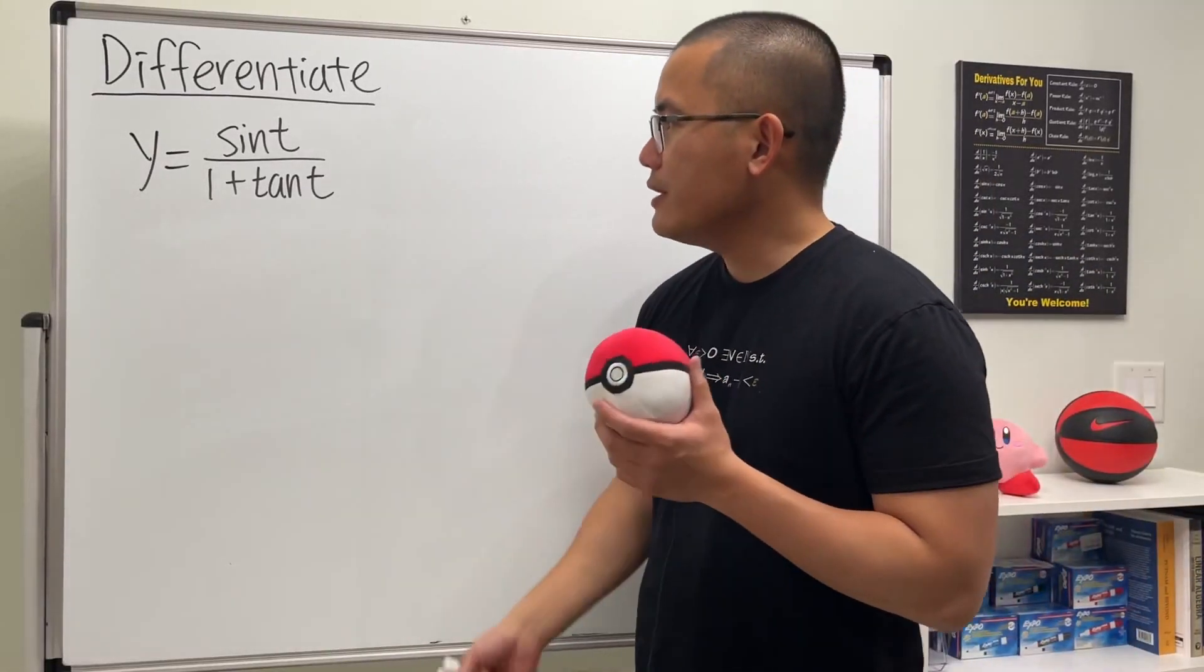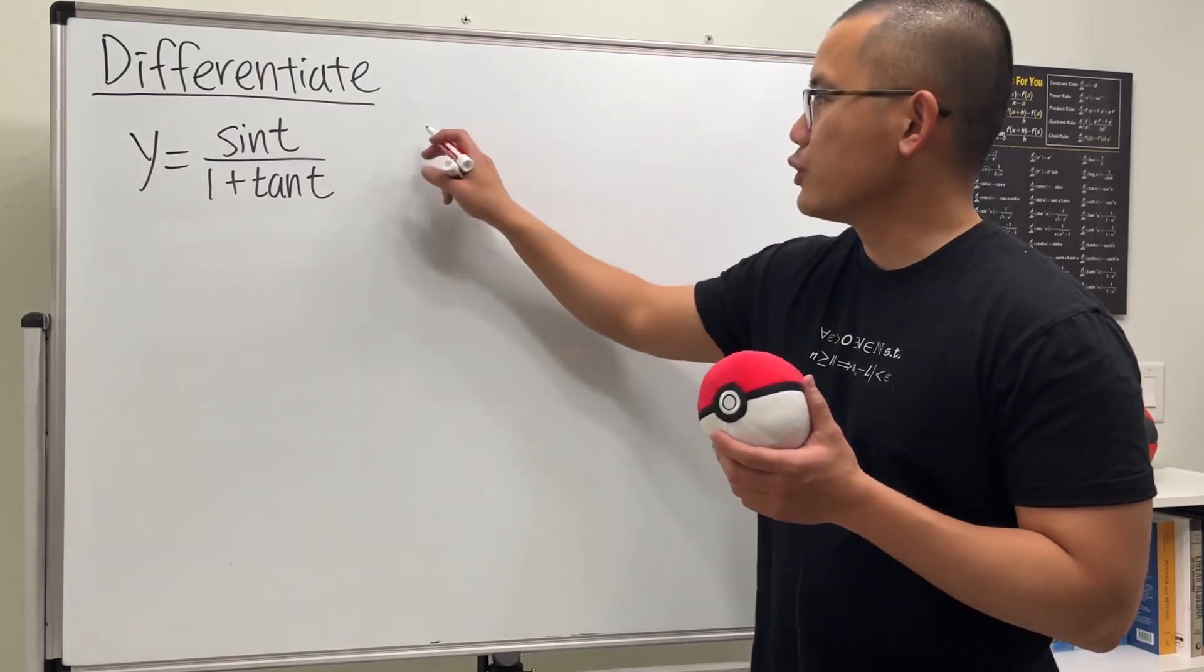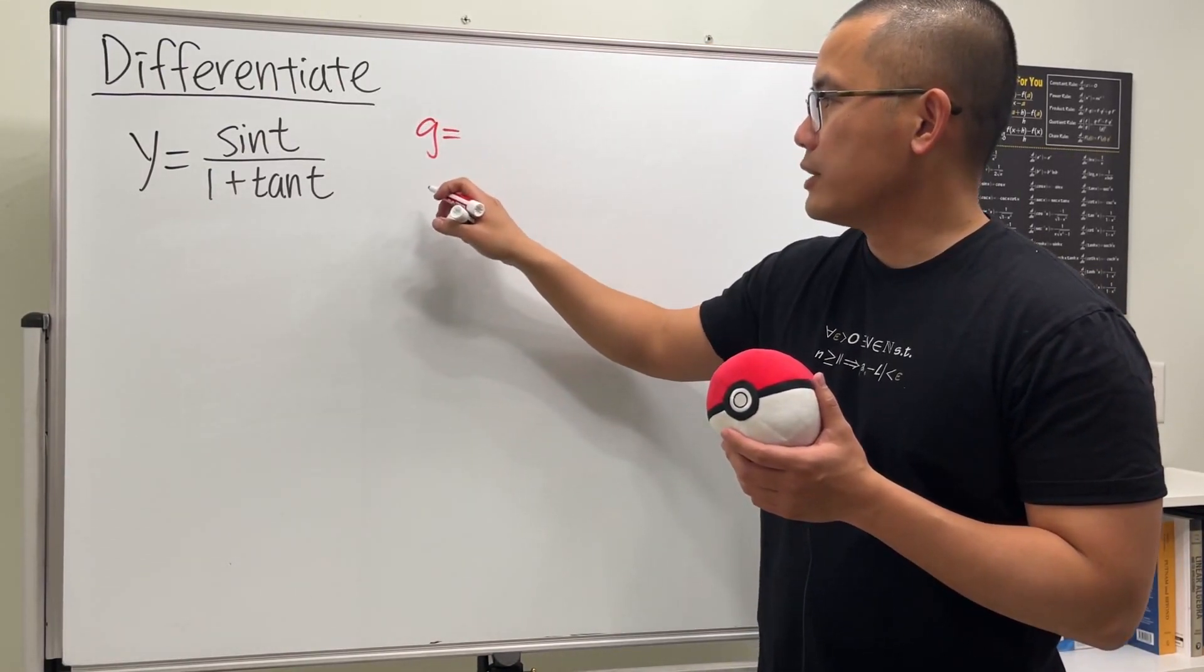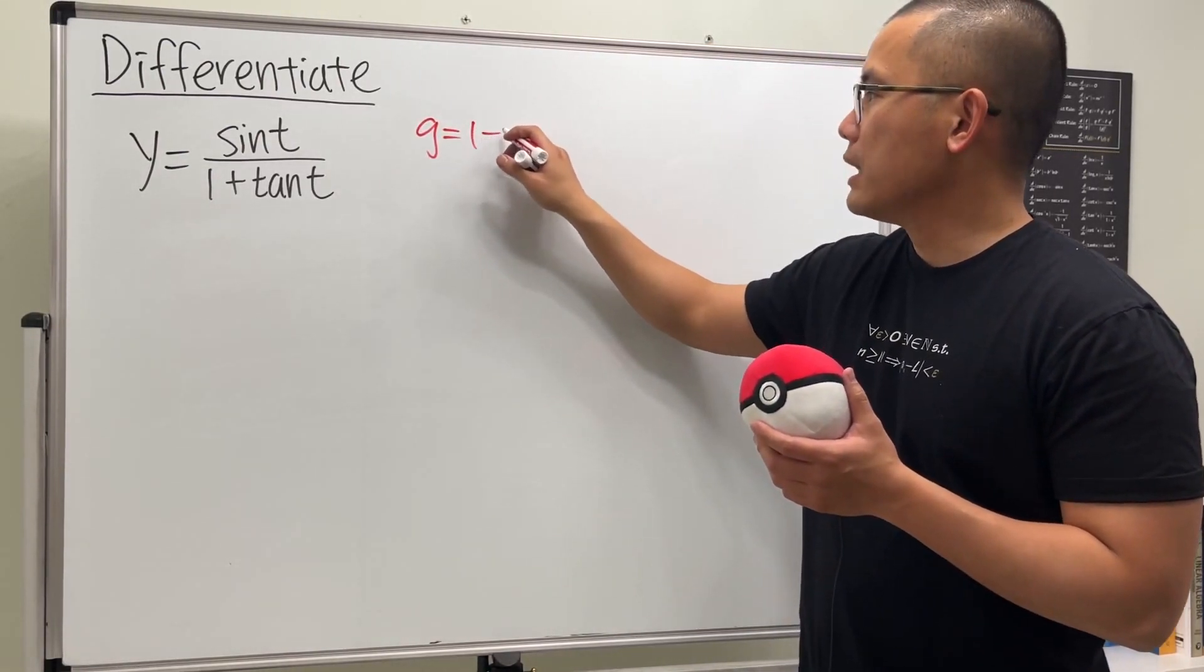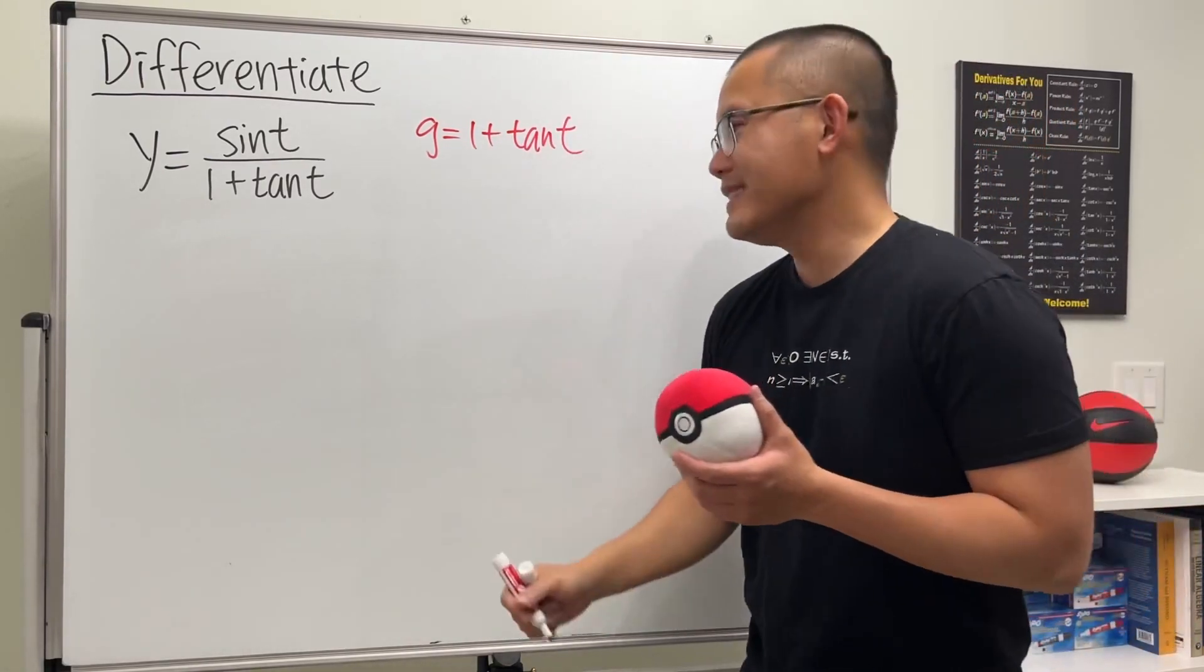All right, we're going to differentiate this function, and again, it's a quotient, so let's use the quotient rule. Let me write down the bottom function right here first. So that'll be denoted by g, and we have 1 plus tangent, and the input is t.